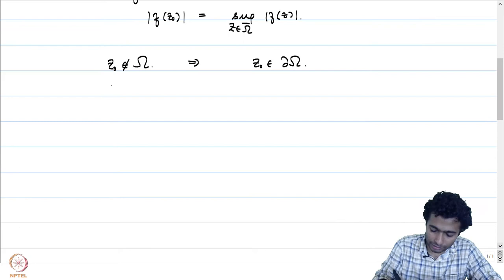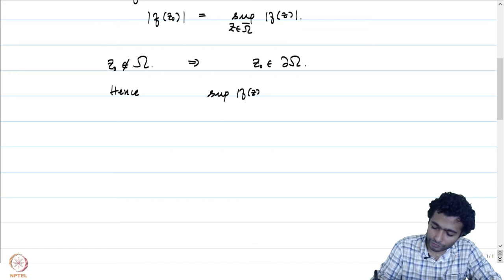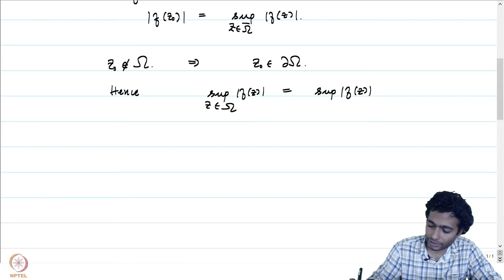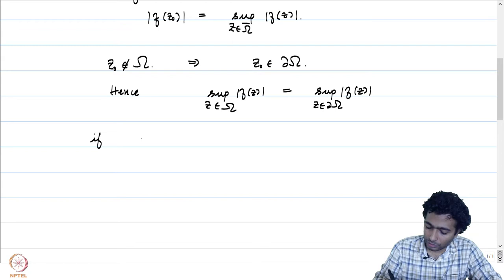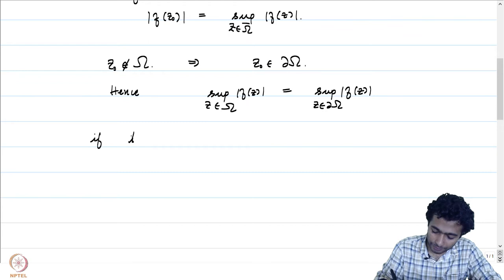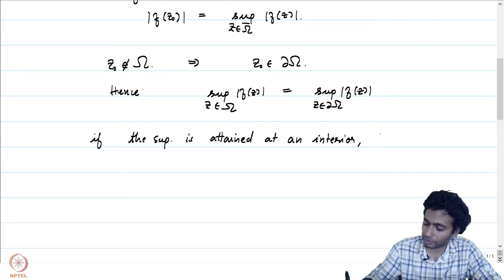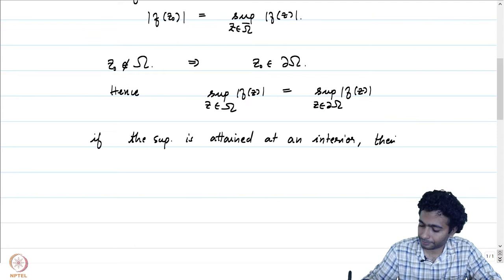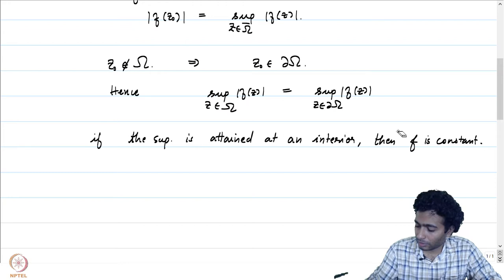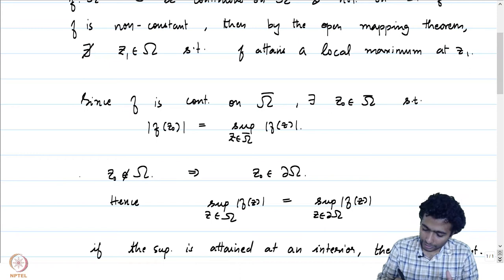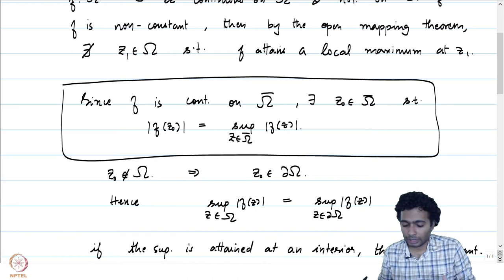Hence, the supremum of |F(z)| for z in the boundary of omega equals the supremum over omega-bar. If the supremum is attained at an interior point, that is possible only if F is constant. Notice how crucially we used the fact that omega is bounded to state this variant of the maximum modulus principle.